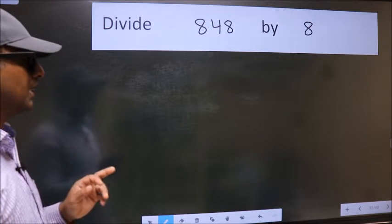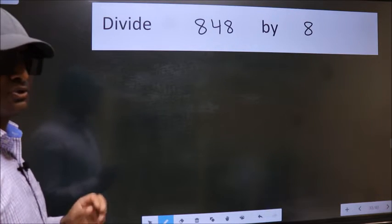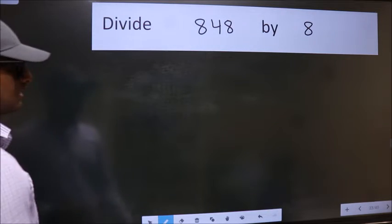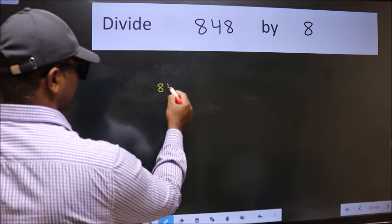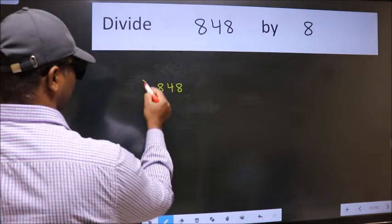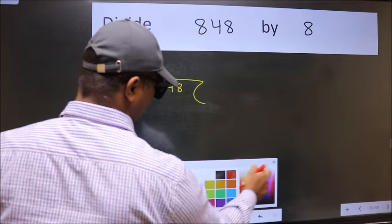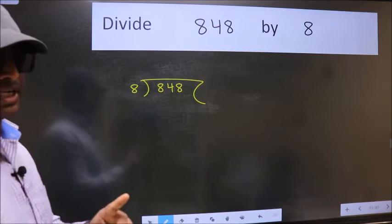Divide 848 by 8. To do this division we should frame it in this way. 848 here, 8 here. This is your step 1.